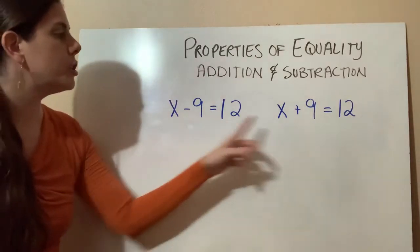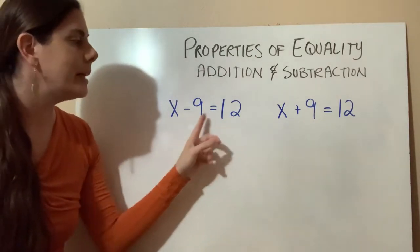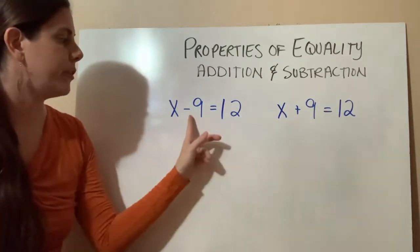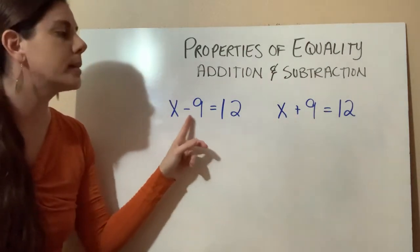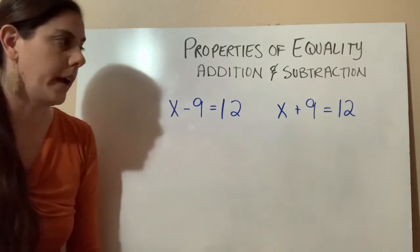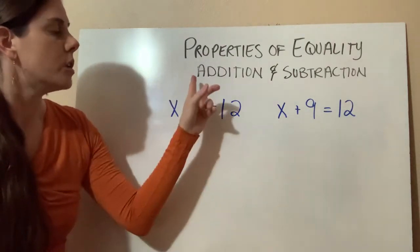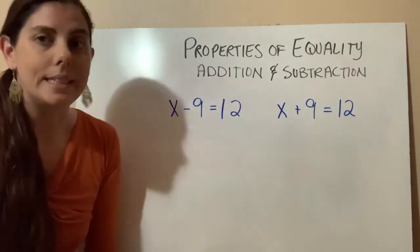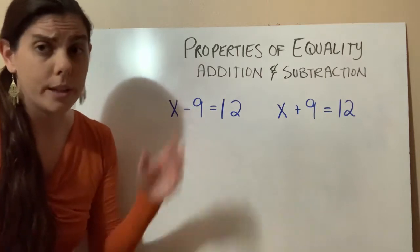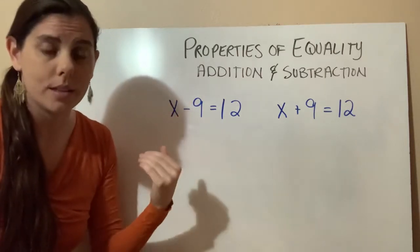The two examples use basically the same numbers but with a different sign: x minus 9 equals 12, and x plus 9 equals 12. First we're going to demonstrate the addition property of equality, which means we're going to be adding something to both sides.